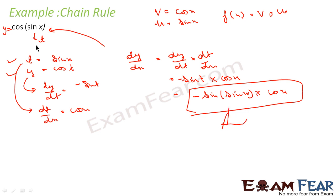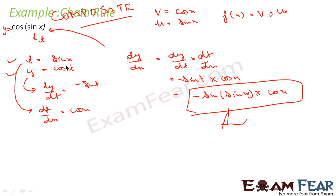So, what I have done? I just observed that this is a composite function. Since it was a composite function, I was able to write it as v equals cos x and u equals sine x. I made sine x as t, got two equations, and used dy by dx equals dy by dt into dt by dx. I got the value of dy by dt and dt by dx, and got the answer.